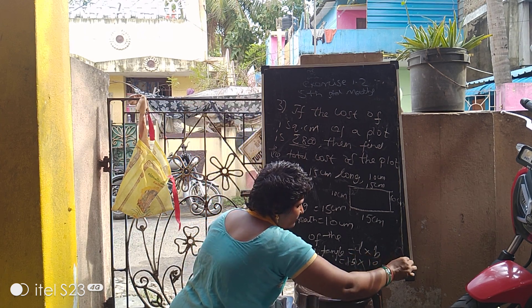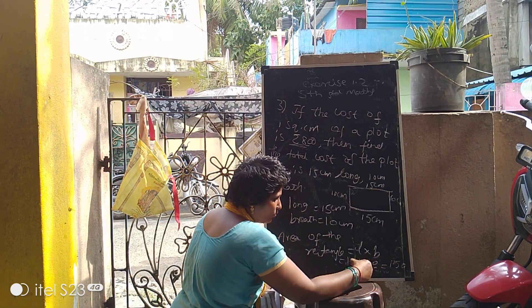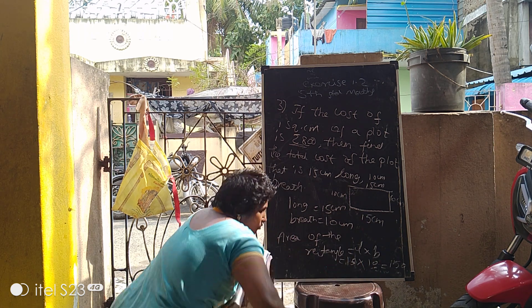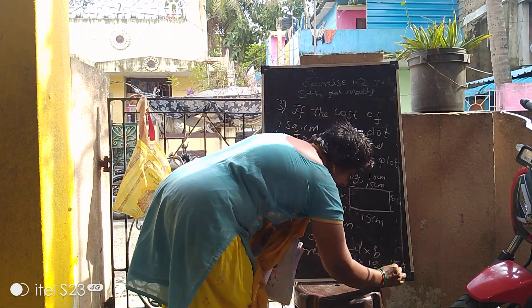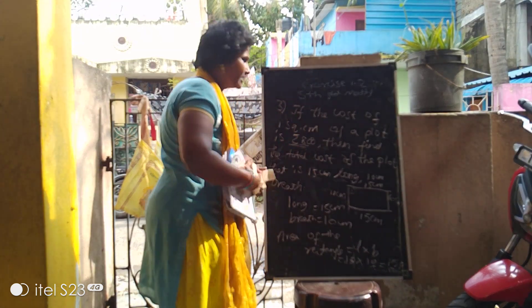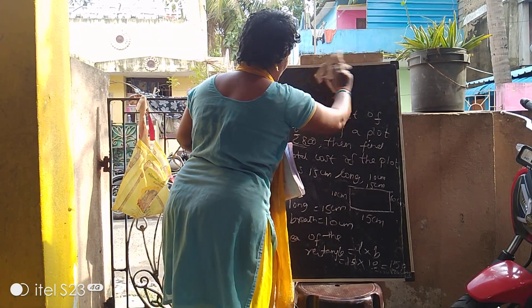15 into 10 equals 150 square centimeters. That is the area of the rectangle.